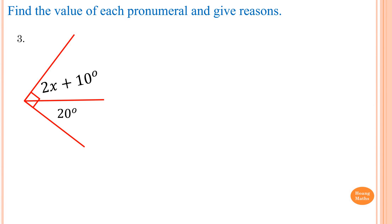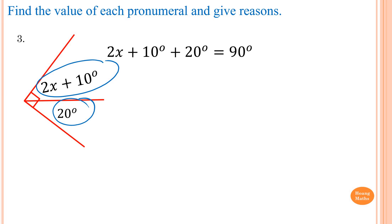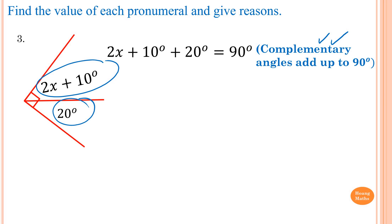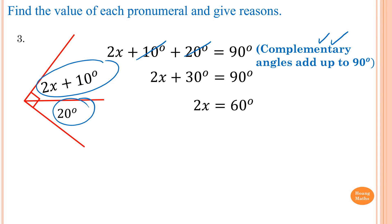Second last question: 2x plus 10, and 20 degrees — they are complementary angles, so they add up to 90 degrees. The reason is: complementary angles add up to 90 degrees. Collecting like terms: 10 plus 20 is 30. So 2x plus 30 degrees is equal to 90 degrees. Minus 30 on both sides gives 2x equal to 60 degrees. Divide both sides by 2, so x is equal to 30 degrees.